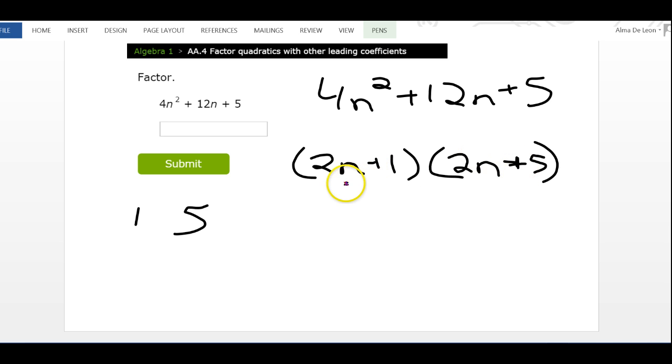To figure out what goes at the front of the parentheses we look at the front of the trinomial, and to figure out what goes at the end of our parentheses we look at the end of our trinomial. Let's see if we get 12n in the middle.